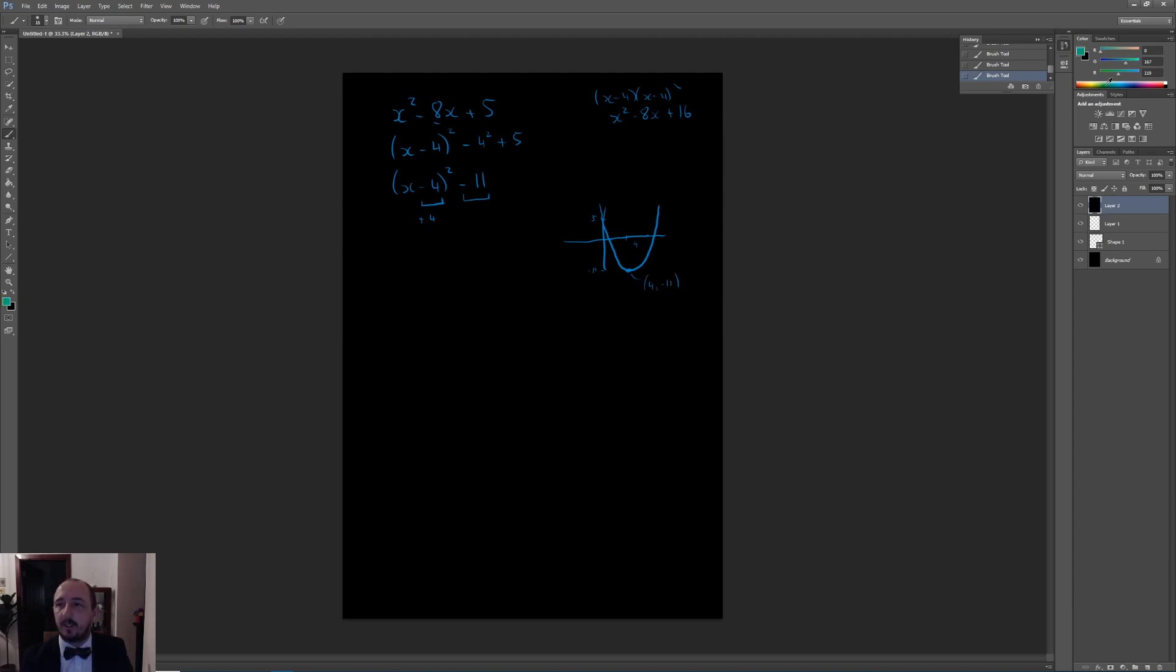Now, you may have to use completing the square to actually solve this equation. So if I just put equals 0 here, then that will allow us to find the x coordinates of the intersection here. So I can solve this equation x minus 4 all squared if I rearrange this to put the 11 on the other side. Take the square root of both sides. Don't forget your plus or minus root 11 like that. And then I'll take the 4 across and have 4 plus or minus root 11. So 4 minus root 11 is this one here. And 4 plus root 11 is that one there.